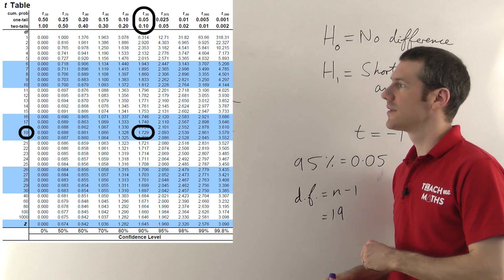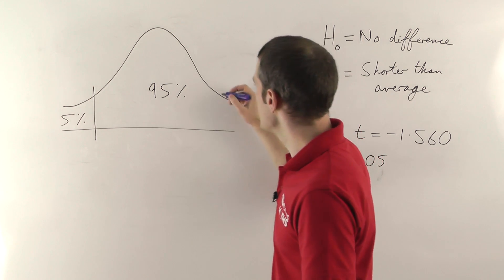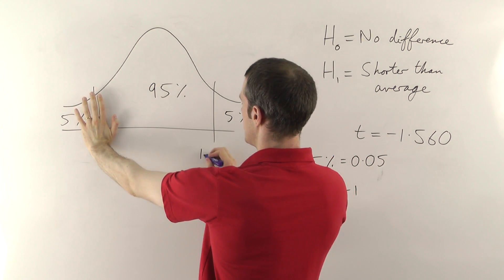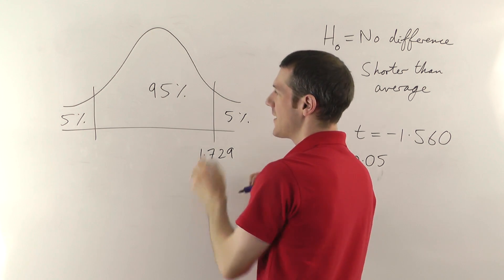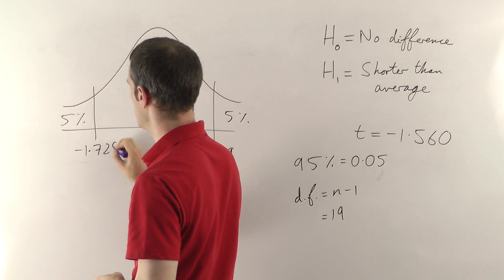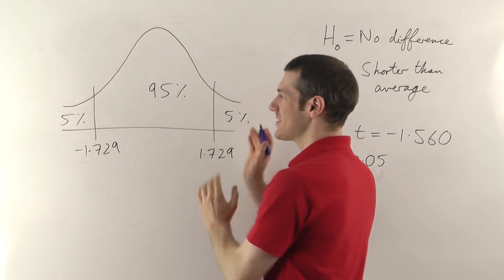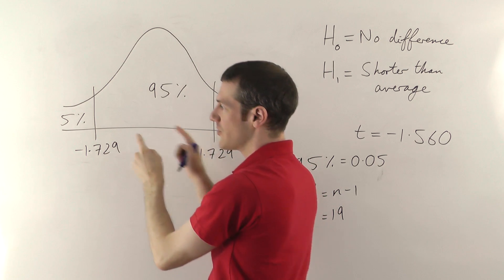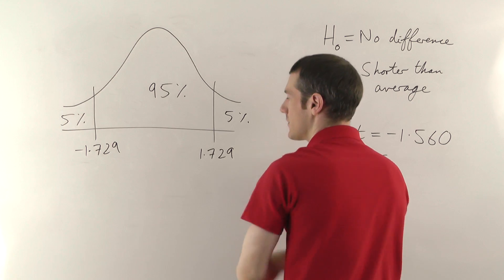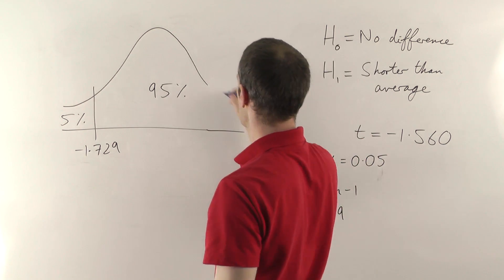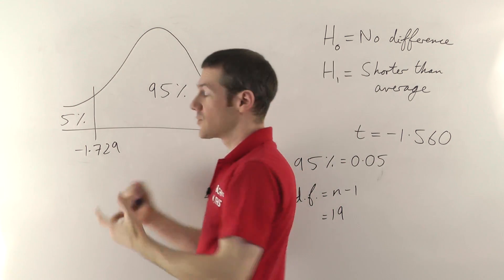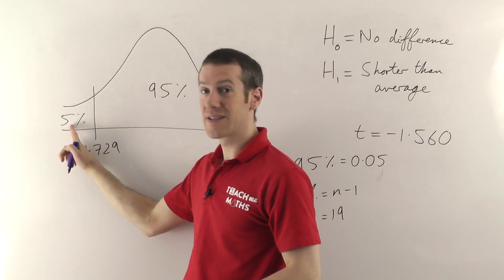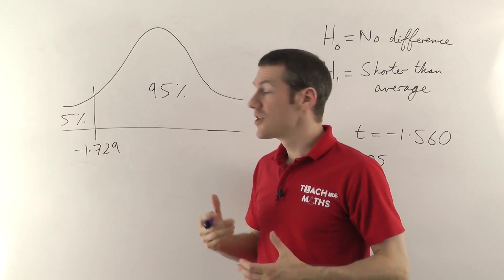Going back to our distribution: 1.729 corresponds to the right side, but since we're looking at the lower tail, this becomes minus 1.729. Because it's a one-tailed test, the values in the table assume you're looking for something bigger, but if you want something on the smaller end you just make them negative — you're going the other direction. So although the table says 1.729, we go with minus 1.729, which corresponds to the negative direction of our t-value.